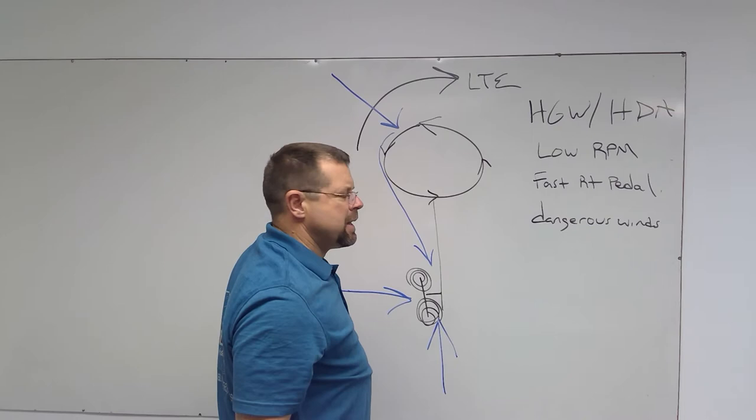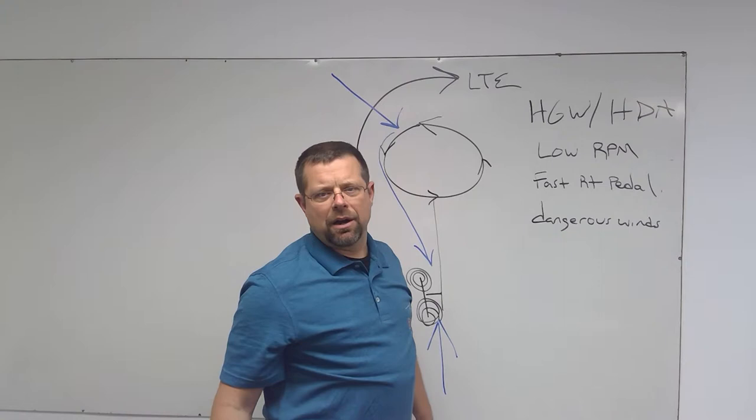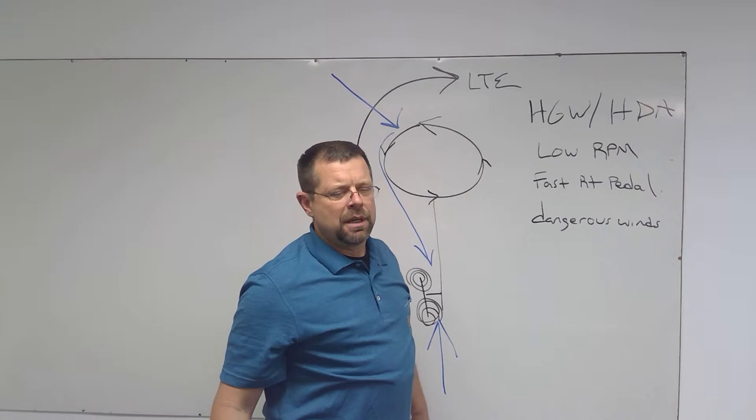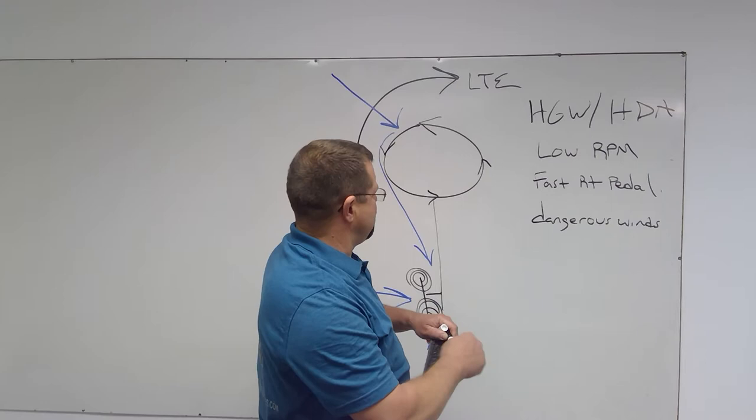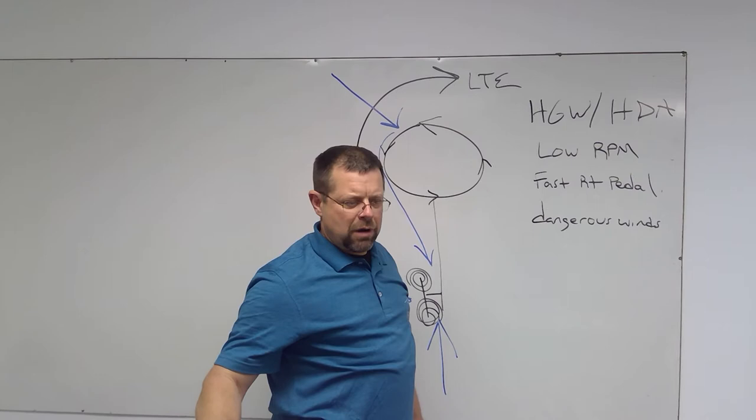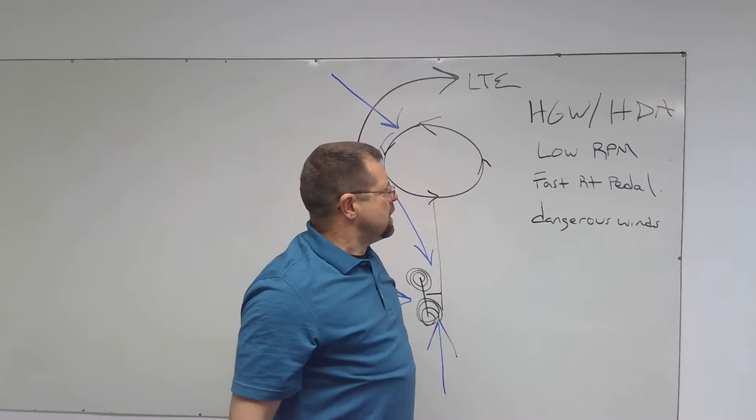Now this can happen in a low-speed, out-of-ground effect operation, below ETL, or it could happen in a hover operation near the ground. So if you get into loss of tail rotor effectiveness, what you'll experience is the aircraft will rapidly yaw to the right, despite that you're adding full left pedal.